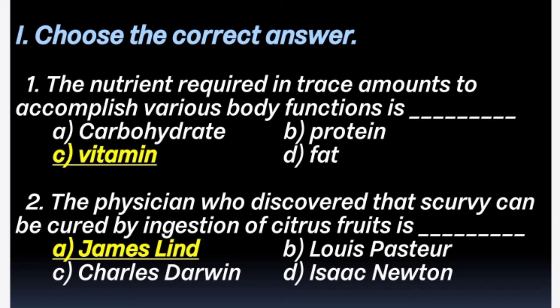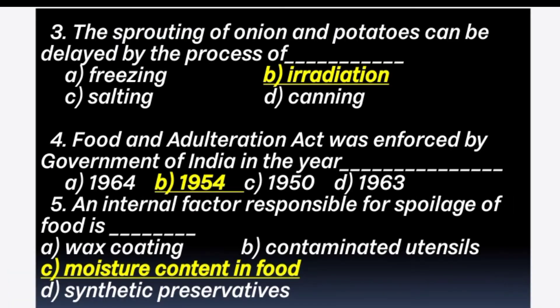2nd question: The physician who discovered that scurvy can be cured by ingestion of citrus fruits is — Answer is option A: James Lind. 3rd question: The sprouting of onion and potatoes can be delayed by the process of — Answer is option B: Irradiation.